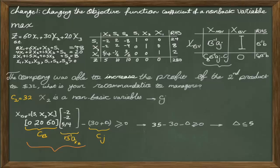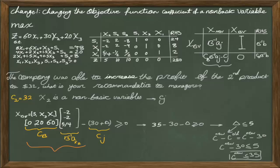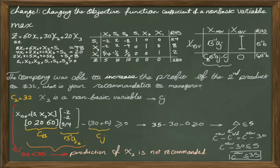Delta is the difference between the new C and the old C, so C-new minus 30. Solving for the range of C-new, if the new coefficient is less than or equal to 35 for X2, we get the same optimal answer. Since the new coefficient is 32, and 32 is less than 35, we remain in the same optimal table. Therefore, since 32 is less than 35, we do not recommend the production of X2.